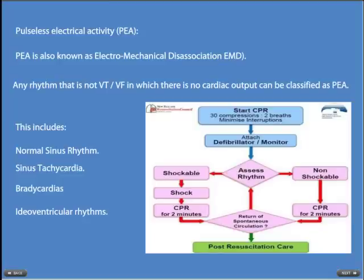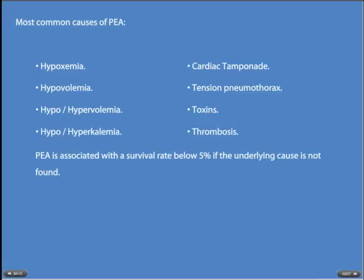The second type of non-shockable rhythm is pulseless electrical activity, or PEA. PEA used to be known as electromechanical dissociation, or EMD. Any rhythm that is not VT or VF in which there is no cardiac output can be classified as PEA — this can include normal sinus rhythm, sinus tachycardias, bradycardias, and idioventricular rhythms. The most common causes of PEA are the four H's and four T's: hypoxemia, hypovolemia, hypo/hyperkalemia, cardiac tamponade, tension pneumothorax, and thrombosis — whether pulmonary or cardiac in origin. PEA is associated with a survival rate of less than 5% if the underlying cause is not found and rectified.